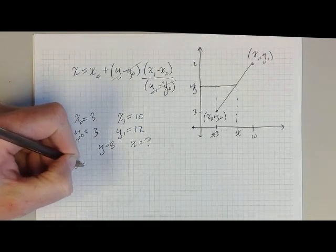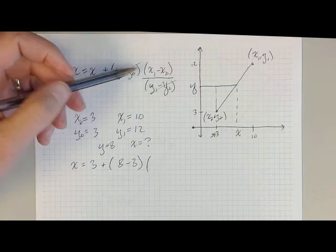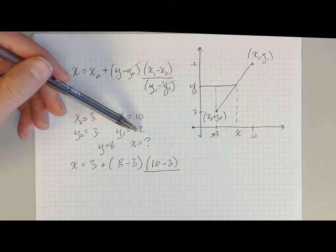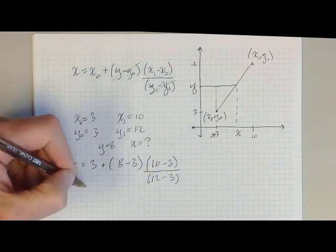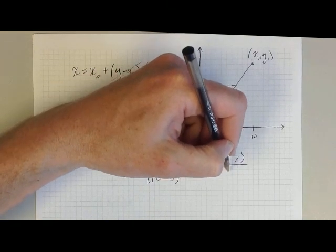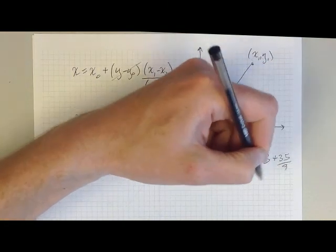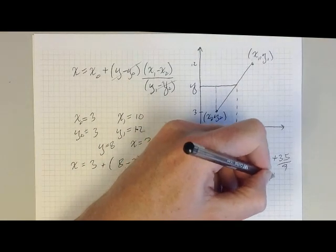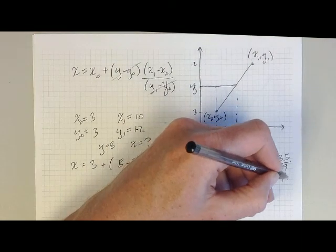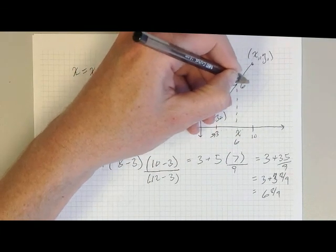We just plug the numbers into the formula and get x equals 3 plus 8 minus 3 times 10 minus 3 divided by 12 minus 3. That gives us 3 plus 5 times 7 over 9, which is 3 plus 35 over 9, which is 3 plus 3 and 8 ninths, giving us 6 and 8 ninths. So the value of x is 6 and 8 ninths.